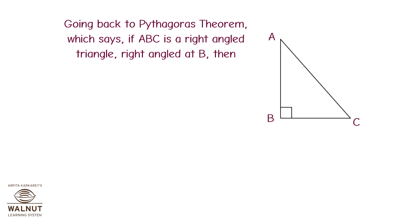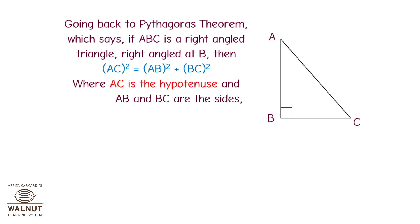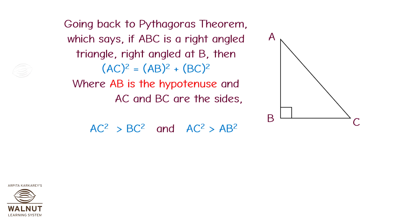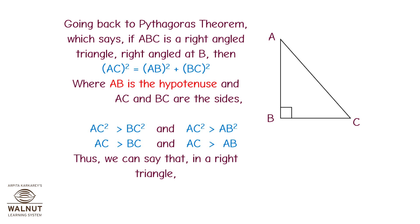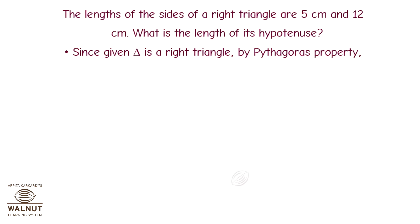Going back to Pythagoras theorem: if ABC is a right-angled triangle right-angled at B, then AC squared equals AB squared plus BC squared, where AC is the hypotenuse and AB and BC are the other sides. AC squared is greater than BC squared and AC squared is greater than AB squared. Hence, AC is greater than BC and AC is greater than AB. Thus, in a right triangle, the hypotenuse is the longest side.